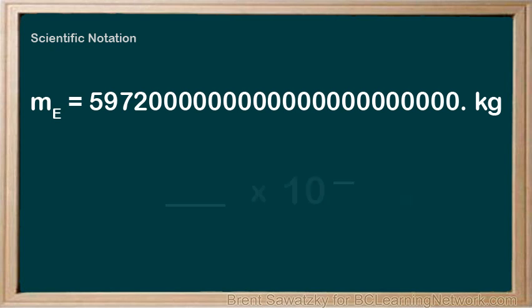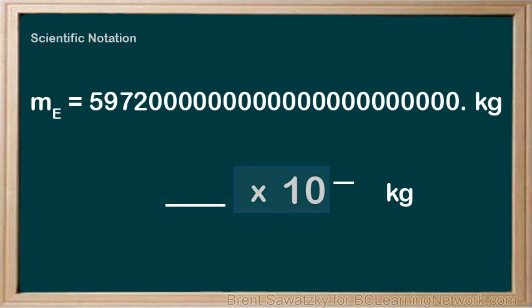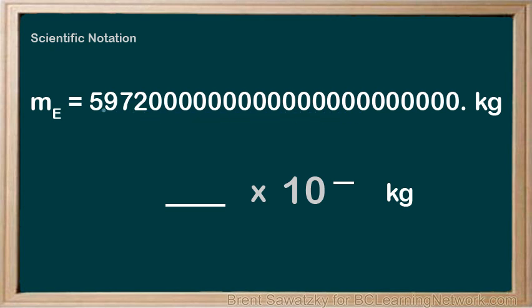All scientific notation is in this format: a number between 1 and 10 out front, then times 10, which is always there, and then the exponent. For the mass of the Earth, we move the decimal over until we get a number between 1 and 10, counting as we go: 1, 2, 3, 4, 5, 6, 7 — and just keep moving until we get to this point, which was 24 moves. So to write this in scientific notation, our number between 1 and 10 out front will be 5.972, and we counted 24 moves of the decimal, so our exponent will be 24. And that's it — this is the mass of the Earth in scientific notation. Much nicer to work with.